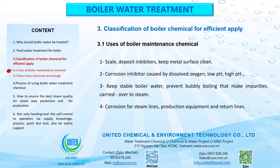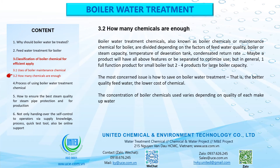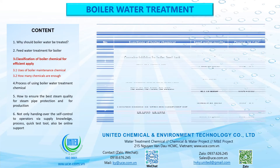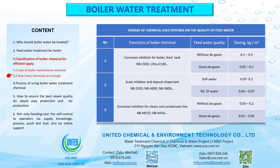3. Classification of boiler chemicals for efficient application. 3.2 How many chemicals are enough? Boiler water treatment chemicals, also known as boiler chemicals or maintenance chemicals for boiler, are divided depending on factors such as feed water quality, boiler or steam capacity, temperature of deaeration tank, and condensate return rate. A single product may have all the above features, or they may be separated to optimize use — in general, one full-function product for small boilers but 2–4 products for large boiler capacity. The most important consideration is how to save on boiler water treatment: the better the feed water quality, the lower the chemical cost. The concentration of boiler chemicals used varies depending on the quality of each makeup water.